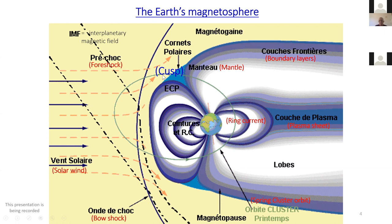The cusps are two singularities within the magnetospheric field topology. You have the dayside closed field lines on one side, the tail field lines on the other, and there is this topological singularity — the cusps — which in principle allows plasma to enter into them.